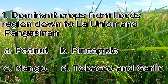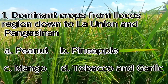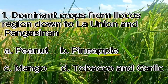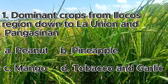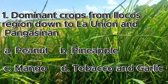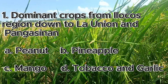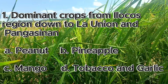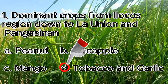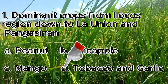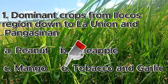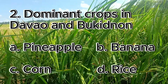Number 1. Dominant crops from Ilocos region down to La Union and Pangasinan. A. Peanut, B. Pineapple, C. Mango, D. Tobacco and Garlic. The answer is letter D, tobacco and garlic.